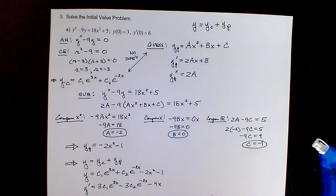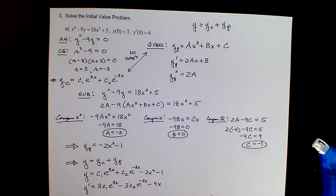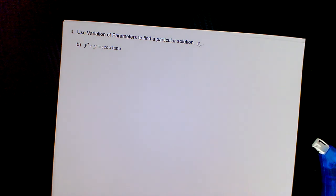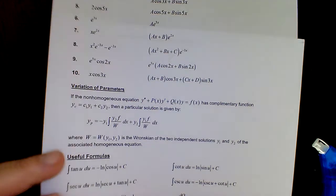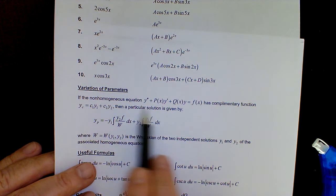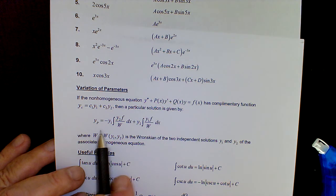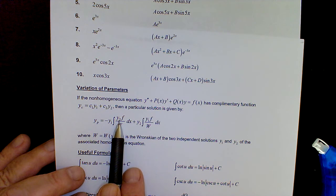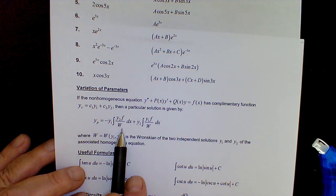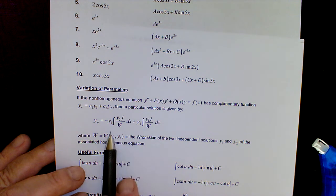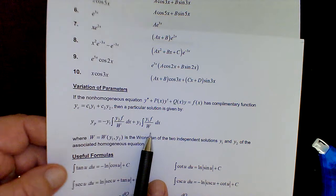Hello everyone, this is a continuation of our review for exam 3, this is part 3. We left off with an initial value problem from last time, and now we're up to variation of parameters. Regarding variation of parameters, we have our special formula on our crib notes — it talks about the non-homogeneous equation: first find the complementary function, then here's the formula for the particular solution. The y1 and y2 come from the complementary function, and the Wronskian is the Wronskian of those functions.